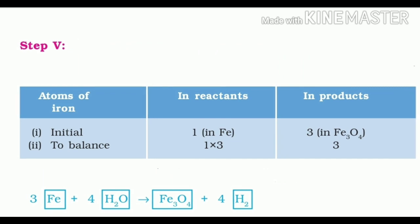Step 5: Now we examine the equation and pick up the third element which is not balanced — that is Iron. Atoms of Iron initially in the reactant: 1 iron atom in the form of Fe. In the product: 3 iron atoms in the form of Fe3O4. To balance, we multiply the reactant side by 3, giving 1 × 3 = 3. In the product it is already 3. To equalize iron, we take 3 atoms of iron on the left hand side. The equation becomes: 3Fe + 4H2O → Fe3O4 + 4H2.